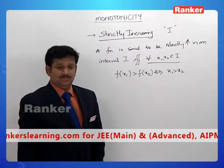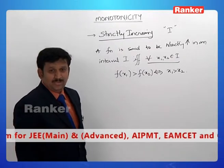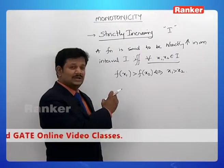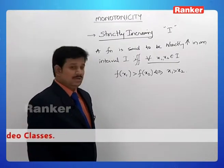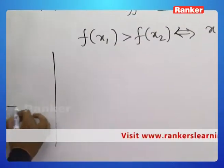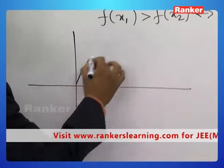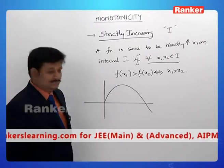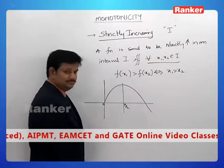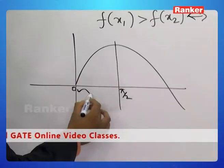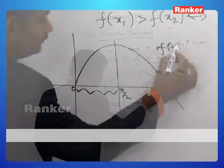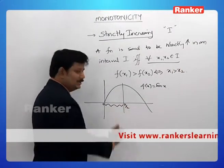A function f(x) is said to be a strictly increasing function in an interval i if and only if for all x1, x2 belonging to i, f(x1) greater than f(x2) implies x1 greater than x2. For example, let us look at the function f(x) = sin x in the interval 0 to π/2. Our target is to discuss the monotonicity of f(x) = sin x in the interval 0 to π/2.